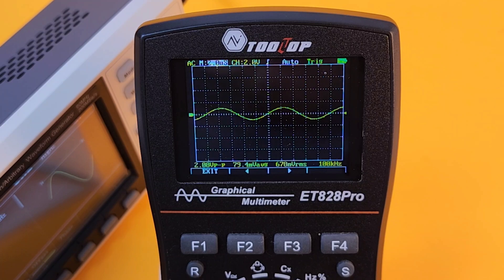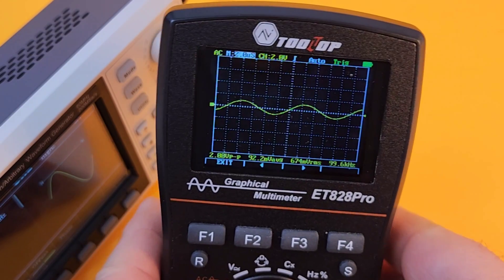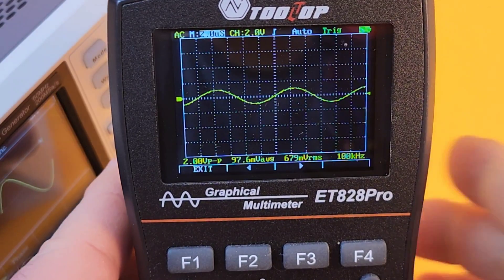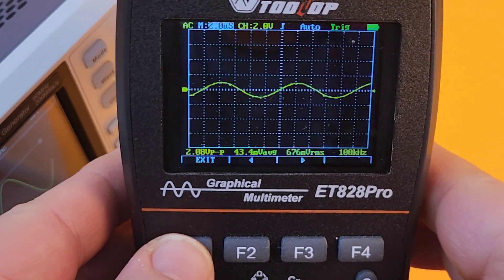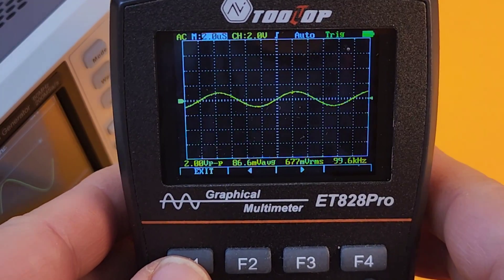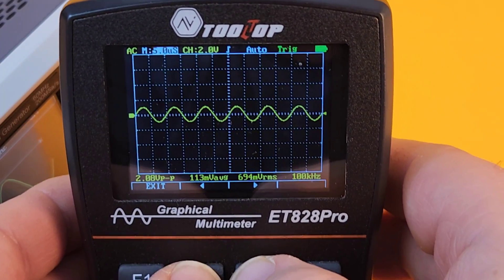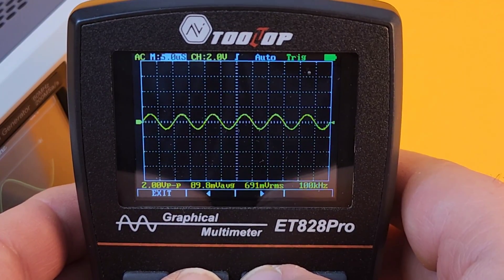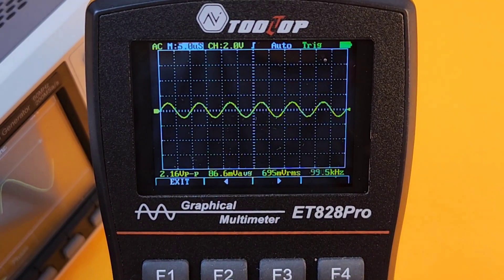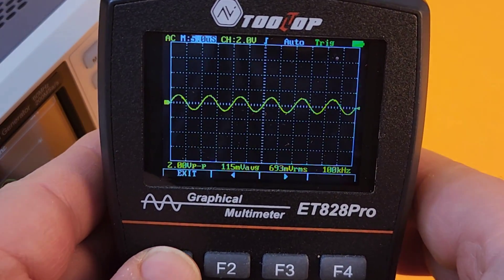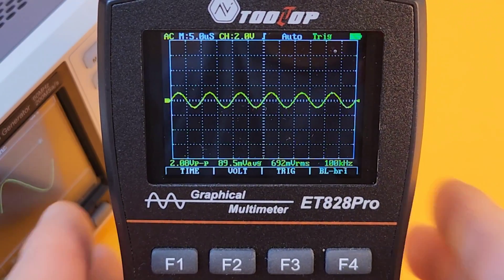Right now we're looking at a waveform because waveforms are what this multimeter, well, waveform multimeter is all about. Set right now for a sine wave, 2 volts peak to peak, and look at that nice looking waveform. We can adjust the waveform by adjusting the time base. How do we do that? Easy. Hit F1. Brings us into time base. F2 and F3 are the time base select keys.